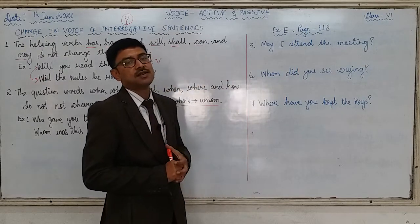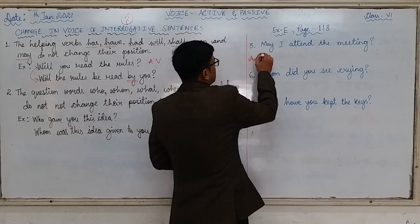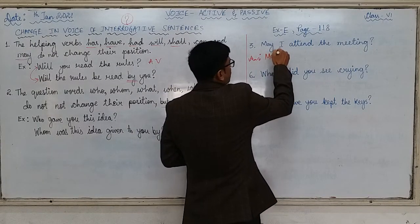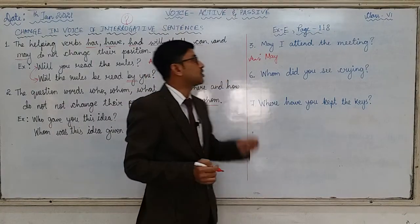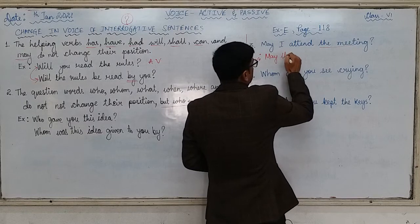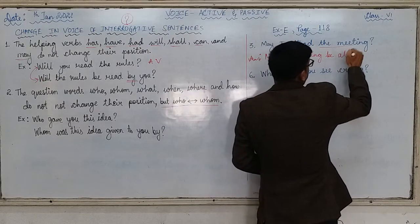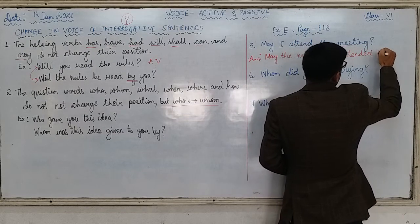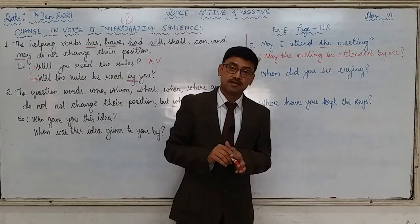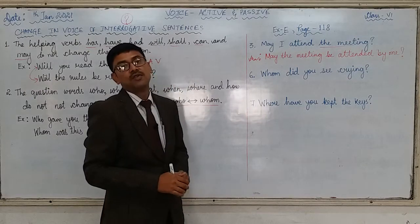I have put up three sentences for us to understand better. 'May I attend the meeting?' — this is in active voice and we have to change it into passive voice. As it is said, the helping verb will not change its place, so first thing first, you write the helping word: 'May the meeting be attended by me.' If you remember, 'I' changes to 'me' — the moment it comes after the verb, it changes into 'me'.